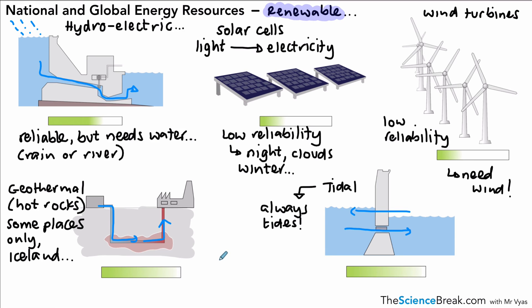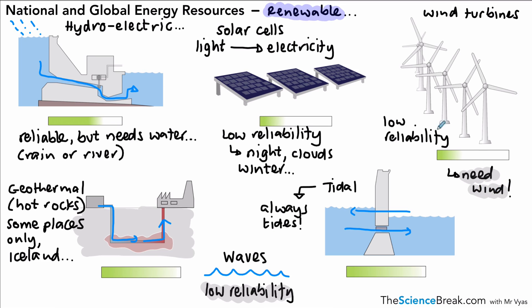We can also use waves to generate electricity. The up and down motion of waves can be used to move structures that generate electricity. However, this has low reliability because waves rely on wind and weather conditions and are not always present. That was a summary of renewable and non-renewable energy resources, what they're used for, and an evaluation of renewable energy resources. Thanks for watching and I'll see you soon.